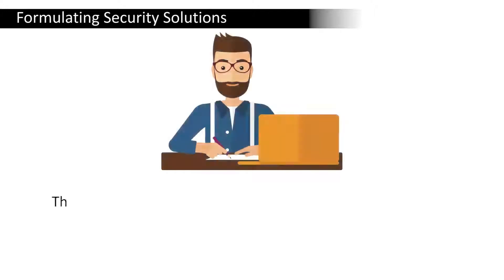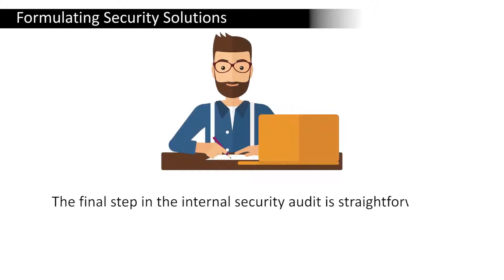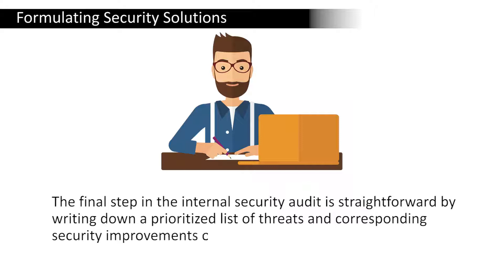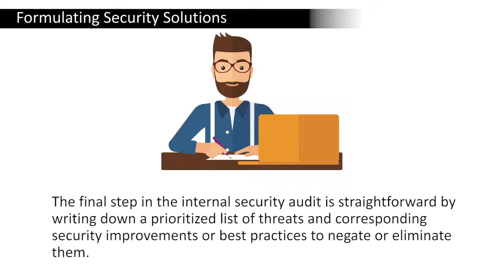Next is the formulation of a security solution. This is the final step in the internal security audit and it is a straightforward mechanism. This happens by writing down a prioritized list of threats and corresponding security improvements or best practices to negate or eliminate them.